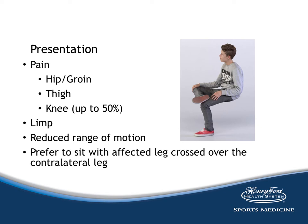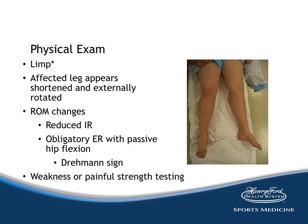Kids with SCFE generally present with pain, usually in the hip or groin region, but it can be referred to the thigh or to the knee in up to 50%. They will often note a limp, have reduced range of motion, and will often prefer to sit with the affected leg crossed over the contralateral leg. This makes sense when you consider that the metaphysis sits anteriorly and in an externally rotated position — sitting in this position reduces tension in the area of injury, while internal rotation increases tension. On physical examination, limp may be the only finding, but you may find the affected limb appears shortened and externally rotated, with reduced internal rotation and obligatory external rotation with passive hip flexion — the Drehmann sign.